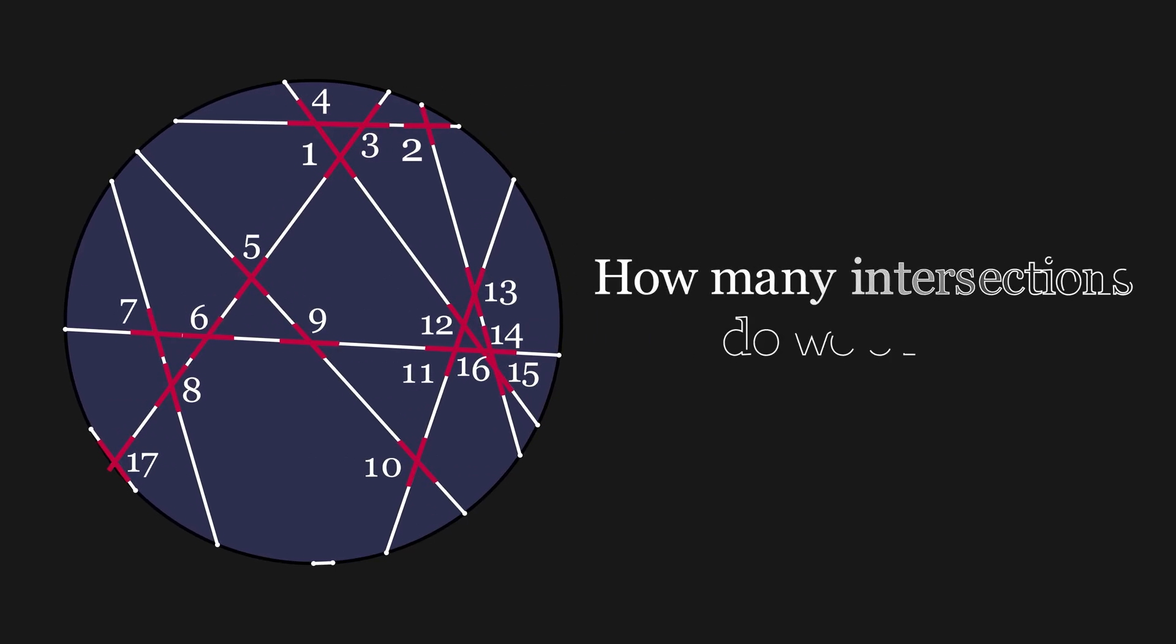Suppose you start with a circle and generate 20 random points on its circumference. Then, connect each point to a random unconnected point and count the number of intersections. The question is, on average, how many intersections do we expect?